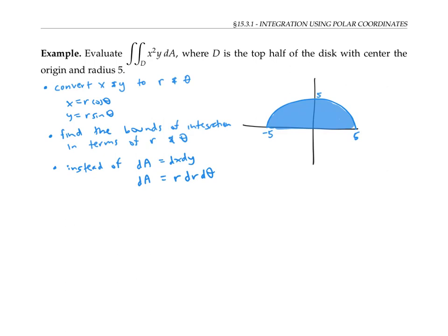You may be wondering, why do we have this extra factor of r here? We didn't have an extra factor of x or y when we used Cartesian coordinates. I'll give an informal justification here. For a more formal justification, please see the next video.